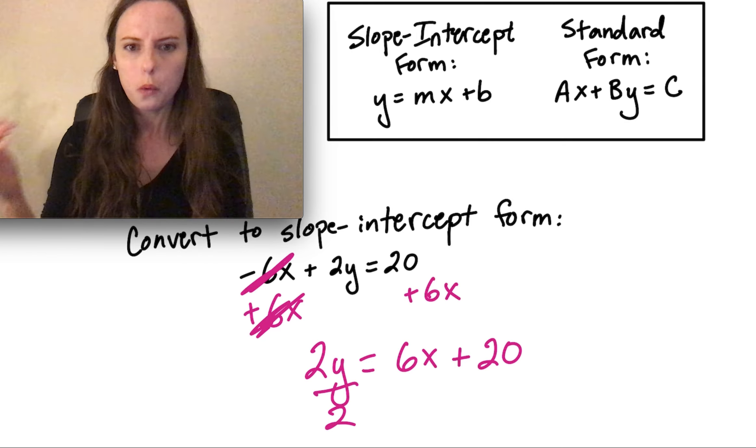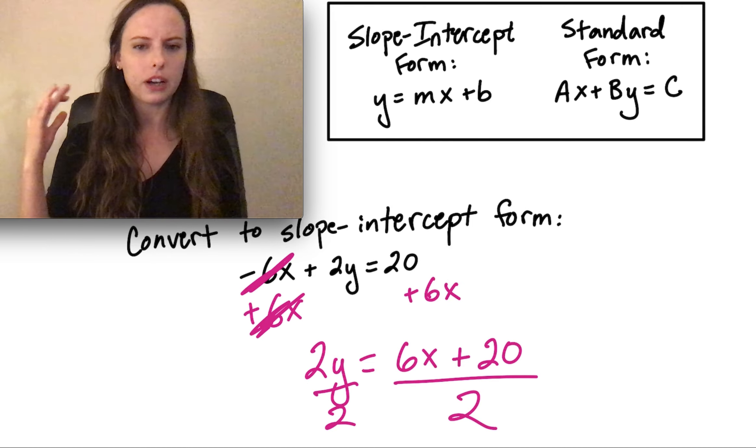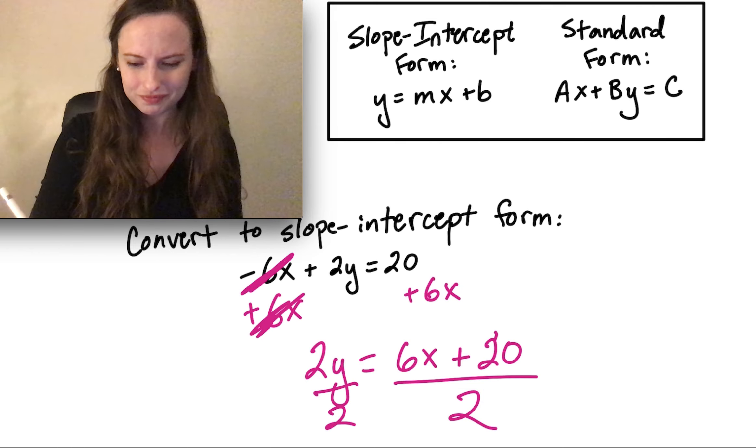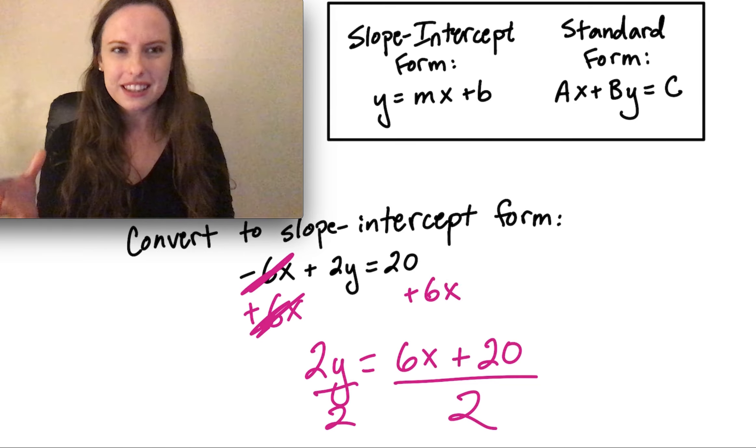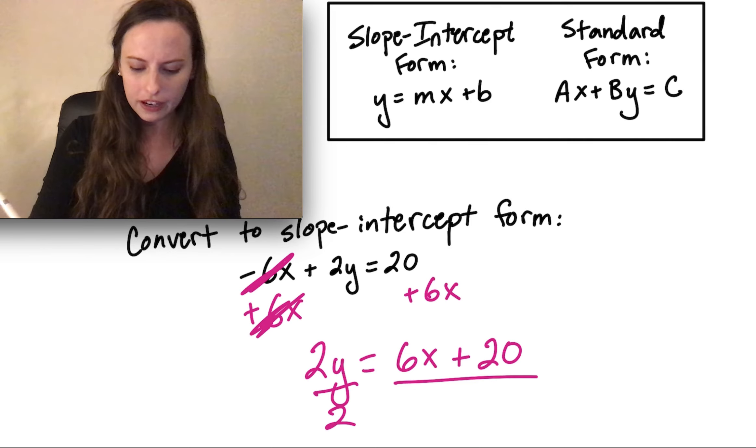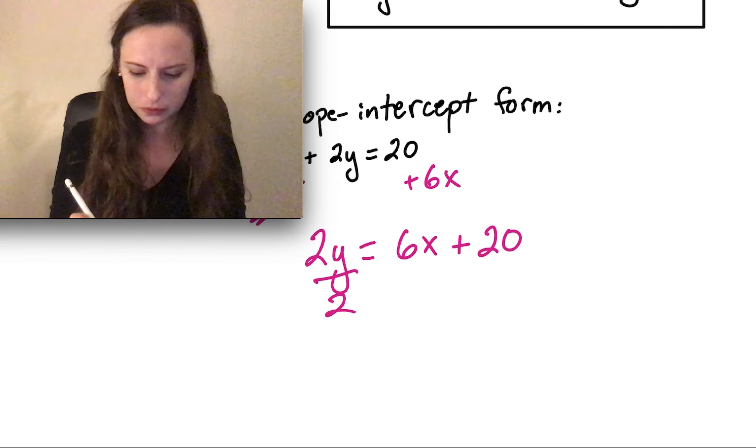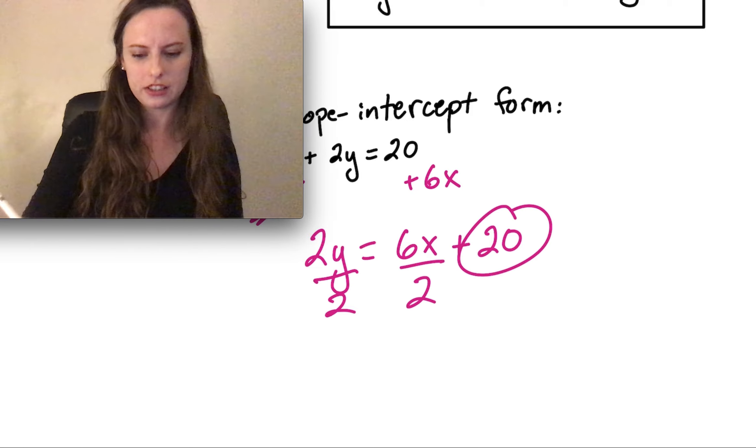On the right-hand side, one thing that you can do is just make it into a big fraction and put all of that stuff, 6x plus 20, all over 2. That's perfectly valid. Another way you can think about dividing all of that stuff by 2 is by dividing each term by 2. 6x is a term, so I can divide that one by 2.